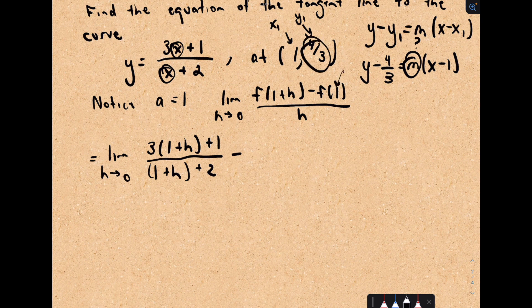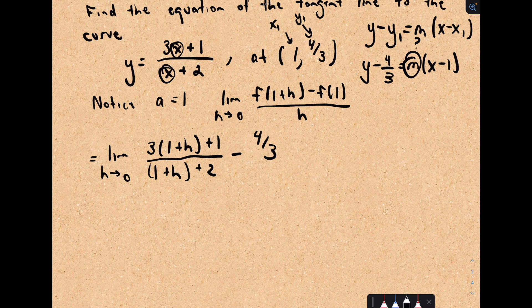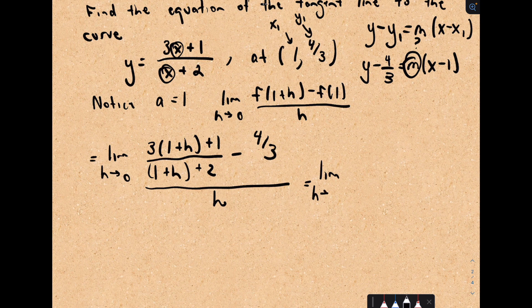So that's my expression f of 1 plus h. We would have to subtract away the value we get when we plug 1 in, but that's already given to us. We already know that that's the value 4 thirds because that's going to be the y coordinate. So I've got f of a plus h minus f of 1, and this is all being divided by h.